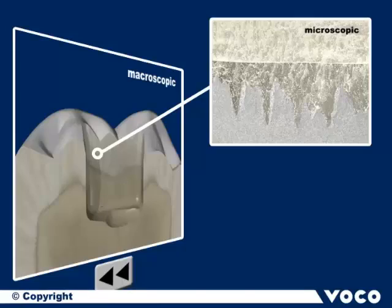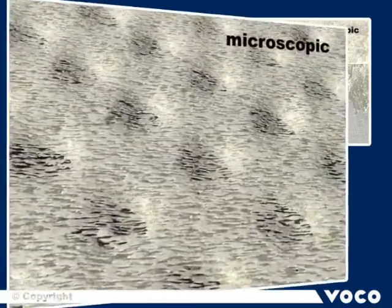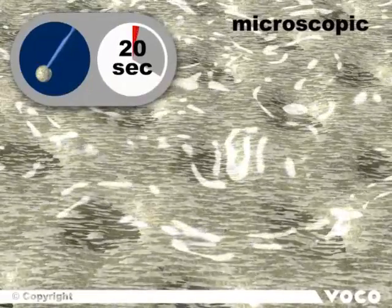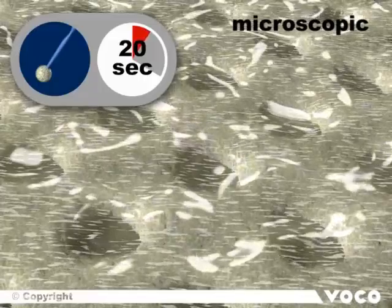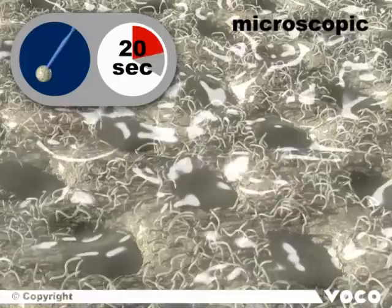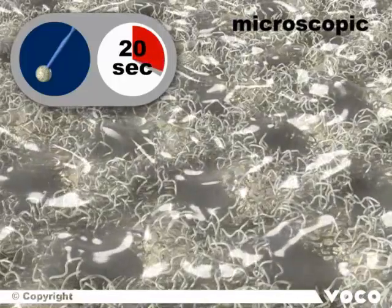The wetting of the dentine with the universal adhesive used in self-etch mode leads to some more complex reactions compared to enamel. During the initial acidic phase of the adhesive, the calcium on the outer surface of the tooth substance is dissolved. The dentine tubules are opened and the collagen fibers are exposed.